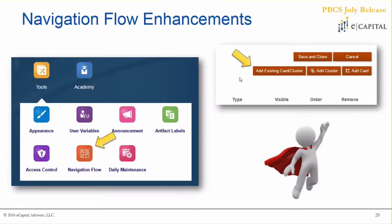They're continuing to add functionality to navigation flow. If you go to Tools > Navigation Flow, you now have a new button called 'Add Existing Card or Cluster.' In the past when you were customizing navigation flows to make the simplified interface more user-friendly and limit cards or icons you'd never use, this was useful. Now this enhancement allows you to add icons, cards, or clusters that other users have added, as long as you have the appropriate security access.